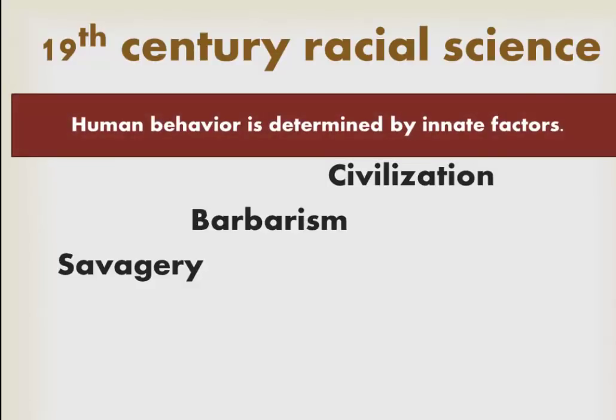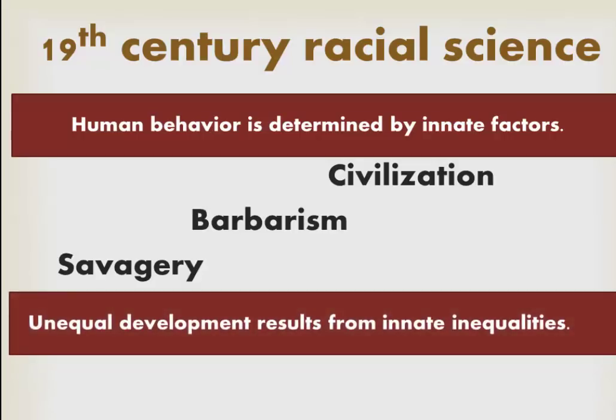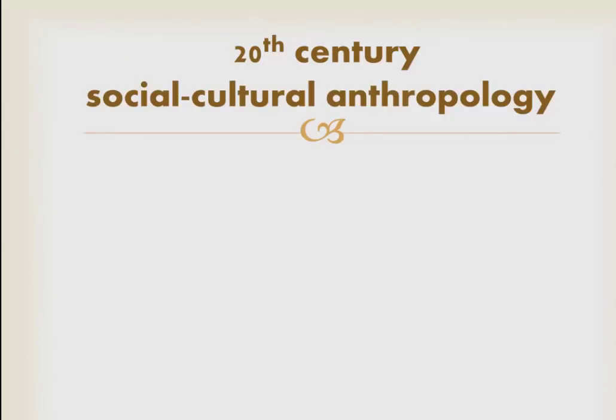This framework became wedded in the 19th century to racial science — the idea that human behavior is determined by innate factors. When these two perspectives are combined, you get the argument that unequal development results from innate inequalities. This had tremendous ideological and political implications and was applied very vigorously, and this is what led to 20th century sociocultural anthropology.